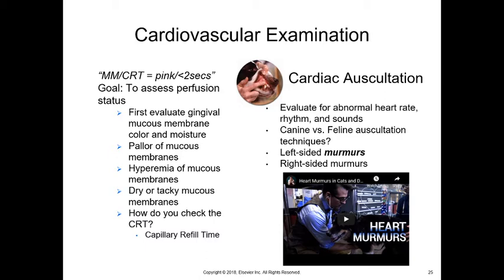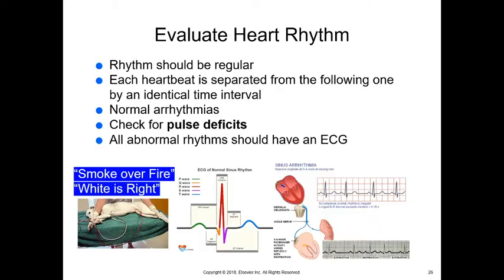Checking capillary refill time: press on the pink gum tissue to blanch it — stopping blood flow for a second — then let go. That whiteness should disappear within two seconds; normal is less than two seconds. Then auscultate the heart: evaluate for abnormal heart rate, rhythm, and sounds. For a canine heart, listen on both sides of the chest; for cats, listen on the sternum and move side to side. Murmurs occur on the left versus right side, and hearing an abnormal sound — not just a strict lub-dub — can tell you what's going on with the heart.